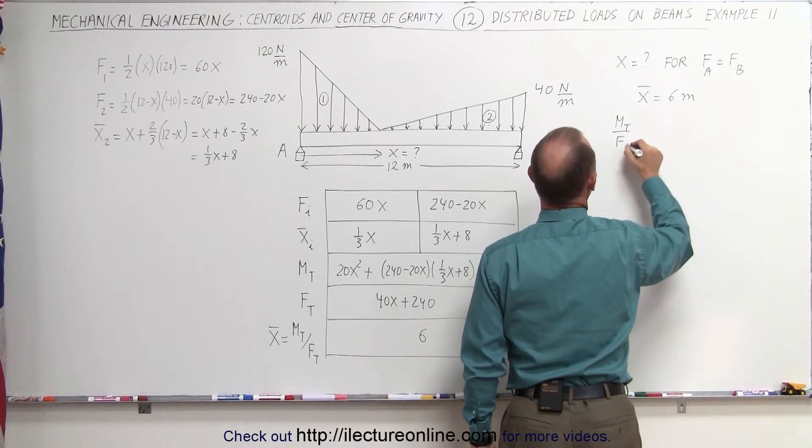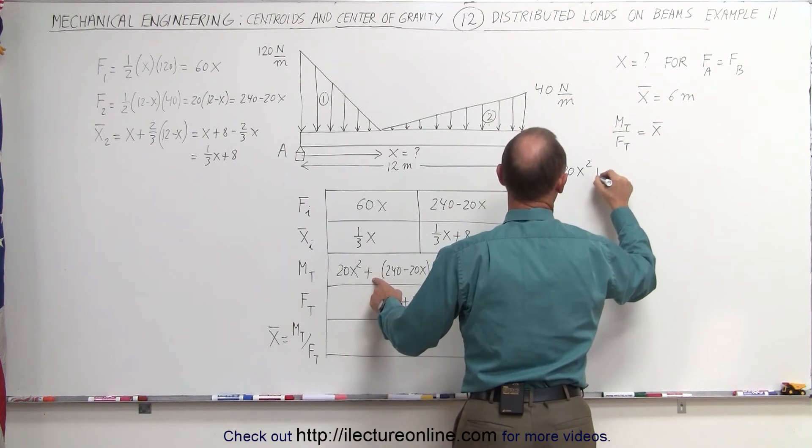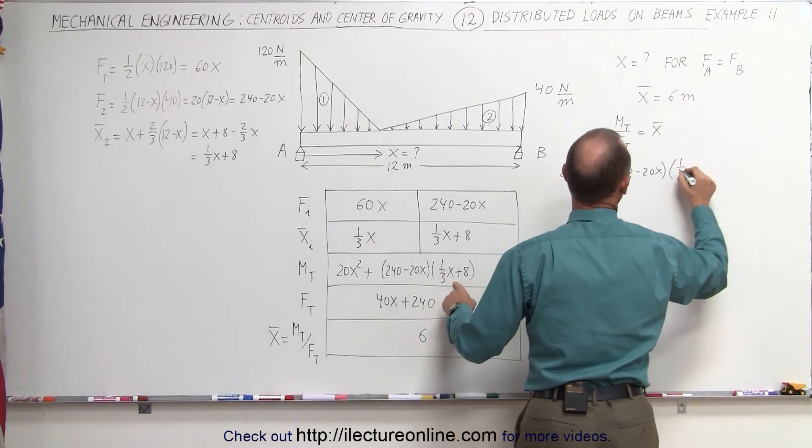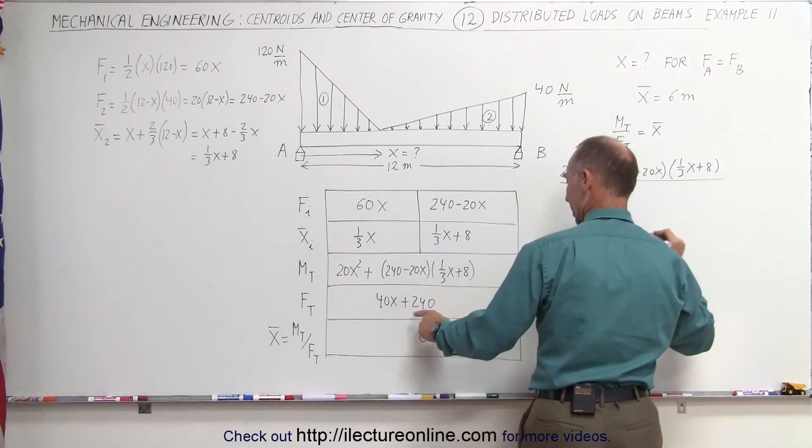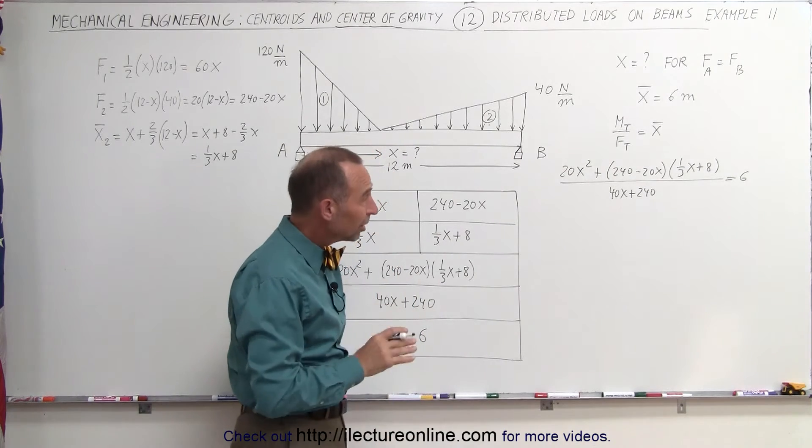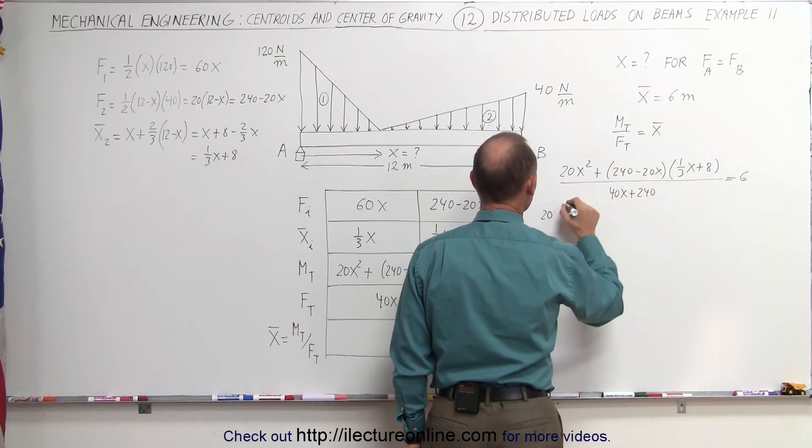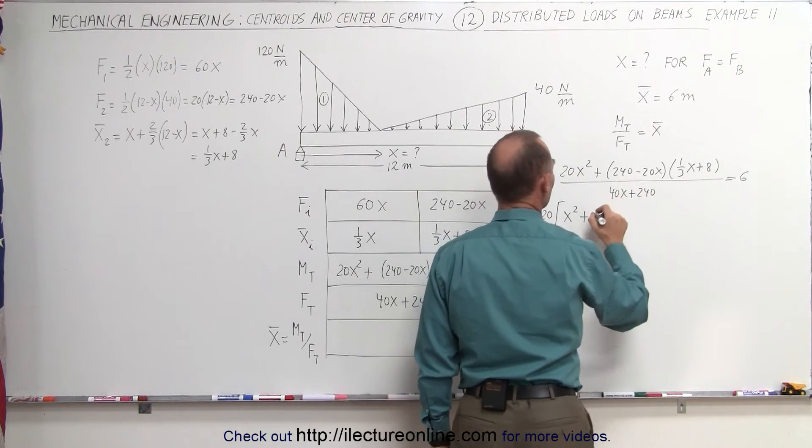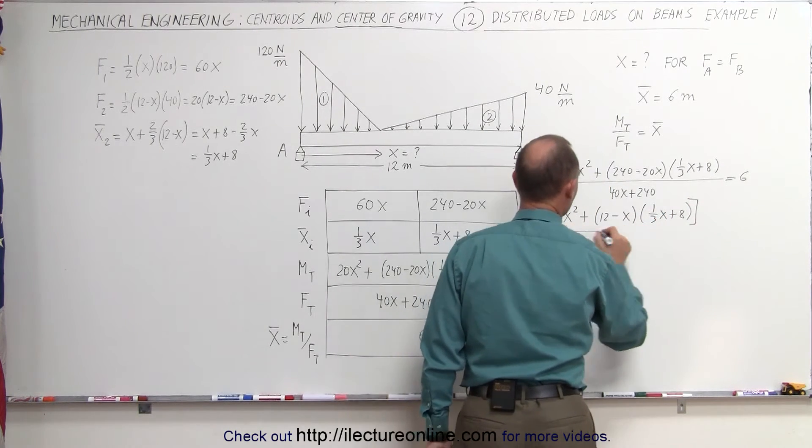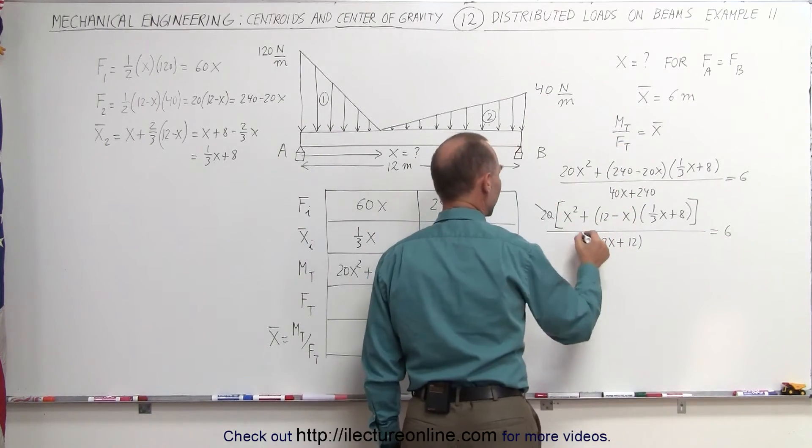The total moment divided by the total force equals to the x-coordinate of the centroid. In this case, that would be 20x squared, plus 240 minus 20x, times one-third x plus 8, the whole thing divided by 40x plus 240, and that equals 6. To simplify things just a little bit, we realize we can factor out a 20 here, we can factor out a 20 there, we can factor out a 20 here, which makes this look like 20 times x squared, plus 20 removed from that gives us 12 minus x, times one-third x plus 8. And the whole thing divided by 20 times 2x plus 12. And we set that equal to 6, and notice of course that the 20's cancel out.